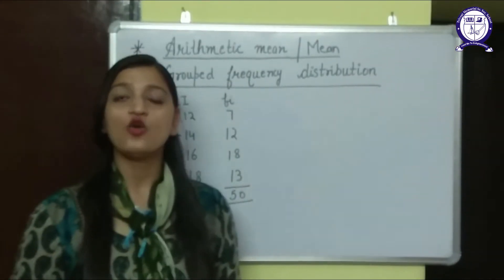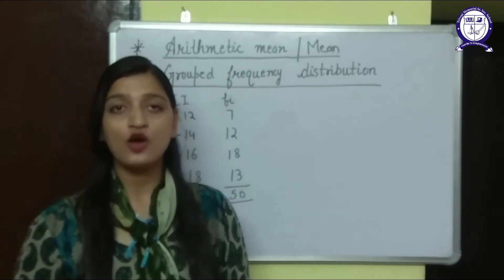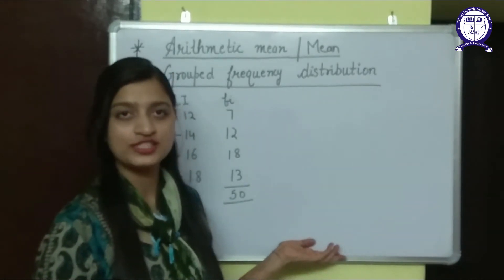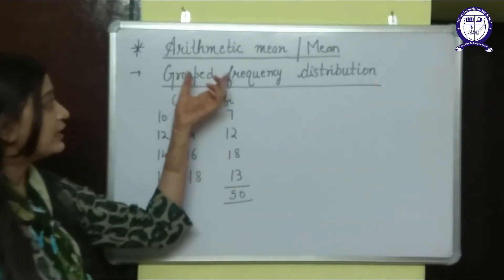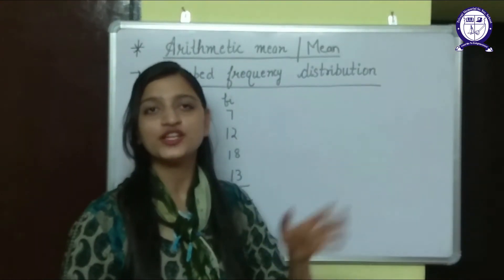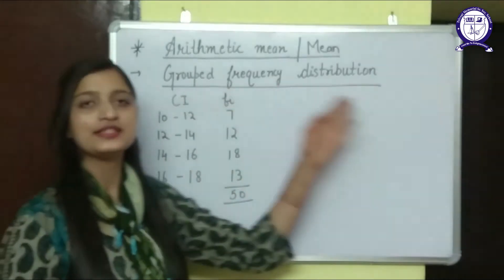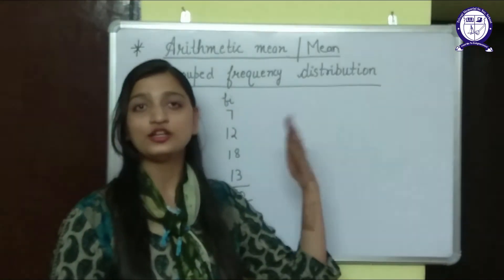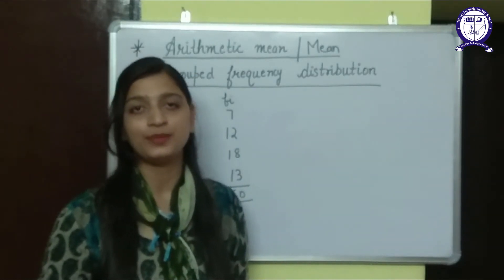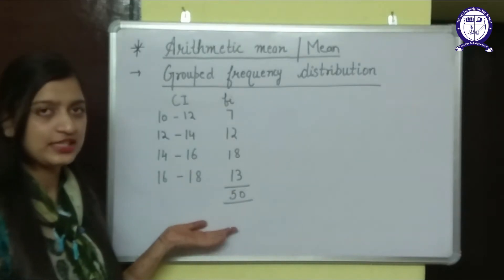Till now we were just revising what we learned in our previous class. Now we are going to learn about our actual topic of this chapter, that is arithmetic mean of grouped frequency distribution. Every question in this chapter will be based on grouped frequency distribution. In grouped frequency distribution, we have class intervals given to us in place of x_i.